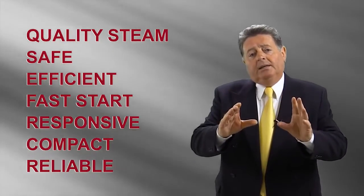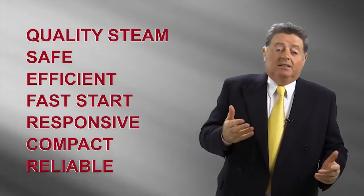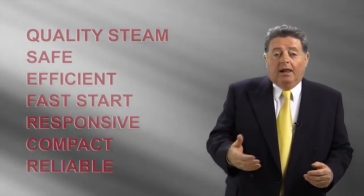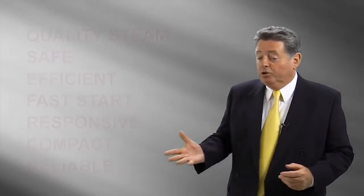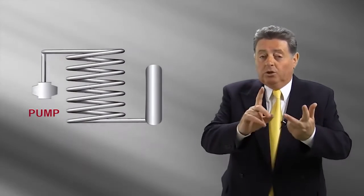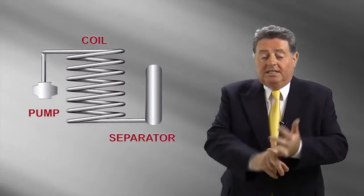So where do all these advantages come from? Like all good designs, the answer is simple. The Clayton steam generator uses only three main components: a special pump, a special coil, and a special steam separator.